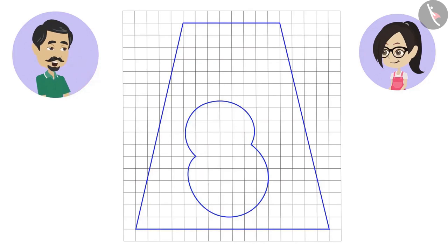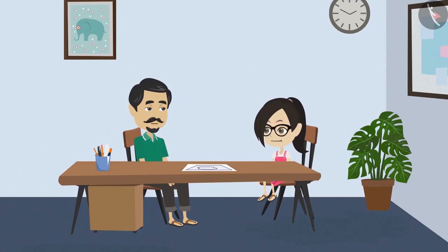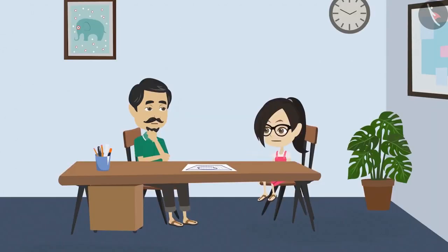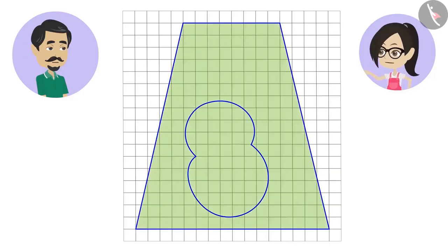But by looking at the map, I am not able to find out whether the pond is one-fourth of our farm or not. Dad, I can help you out to find that. How? Madam has taught us to find the measure of difficult shapes and the shape of both the farm and the pond on the map are difficult.